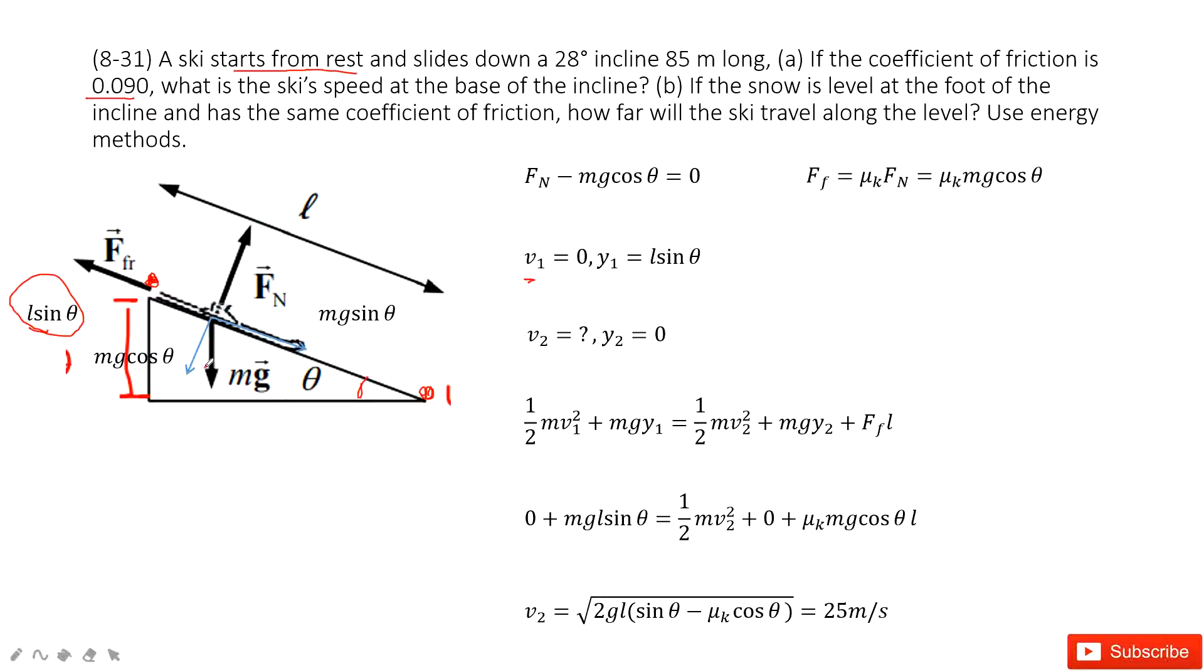Fn minus Mg cos theta equals 0. The force is balanced. Therefore, we can get the friction is mu_k Fn, that is mu_k Mg cos theta. In this way, the friction we find.